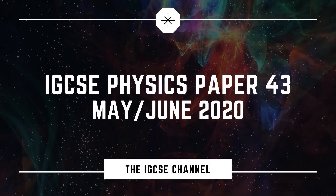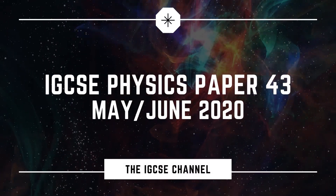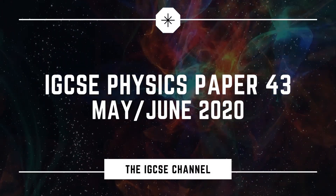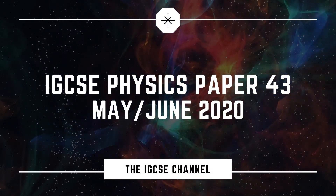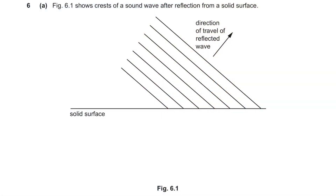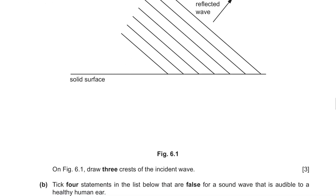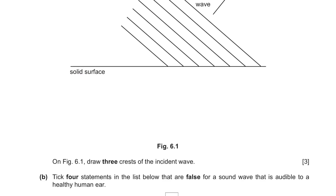Cambridge IGCSE Physics Major 2020 Paper 43 Part 2. Question 6 Part A: Figure 6.1 shows crests of a sound wave after reflection from a solid surface. On Figure 6.1, draw three crests of the incident wave.